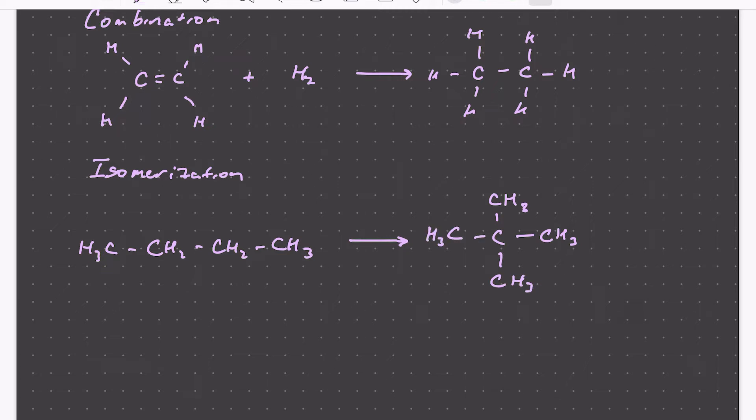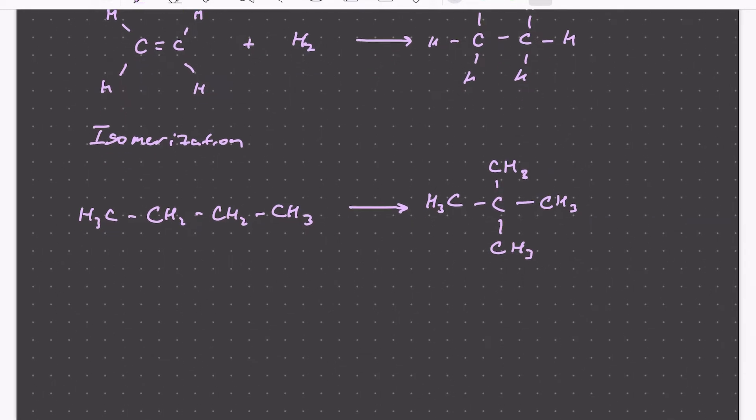So typically we define the rate of reaction, we'll denote this R of J, as the rate of formation of species J, rather than its consumption. And in general this will have units of moles per unit volume per unit time.